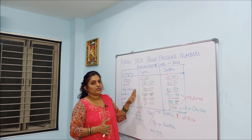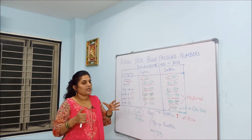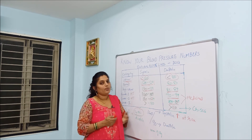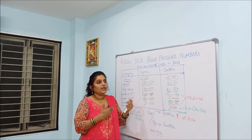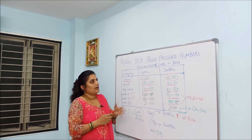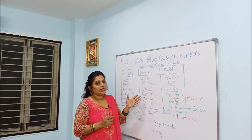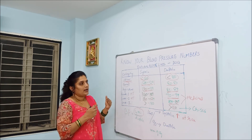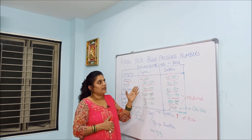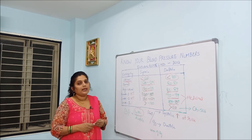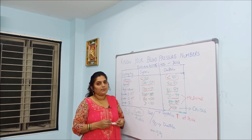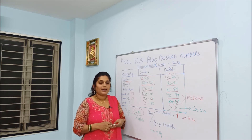These are the blood pressure numbers. We can identify ourselves whether we are at risk or at normal. It is very helpful to track blood pressure numbers so that we can manage our blood pressure with healthy lifestyle and dietary habits. I hope you understand the blood pressure numbers — please like, share with your family members, subscribe, and thank you so much for watching. Take care, bye bye!